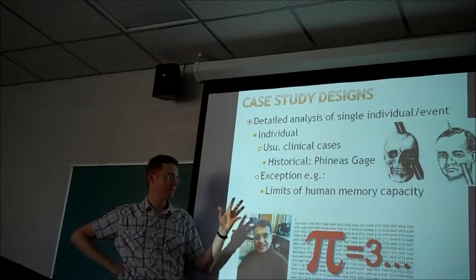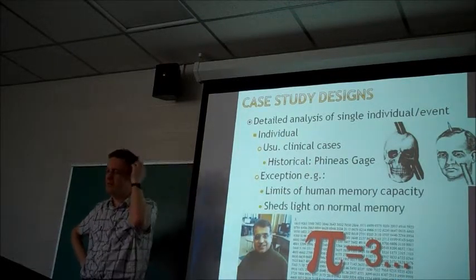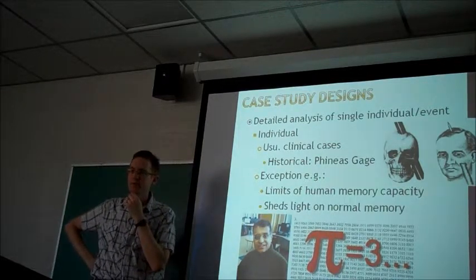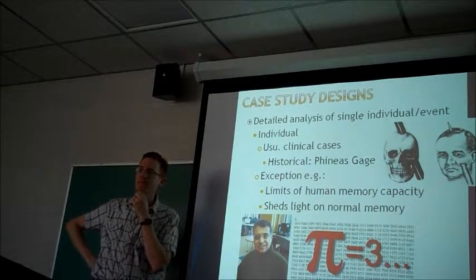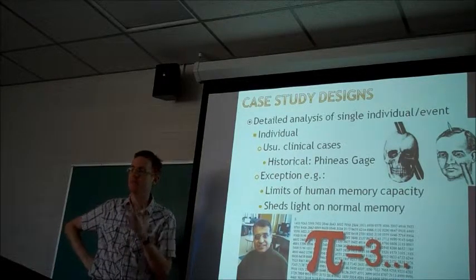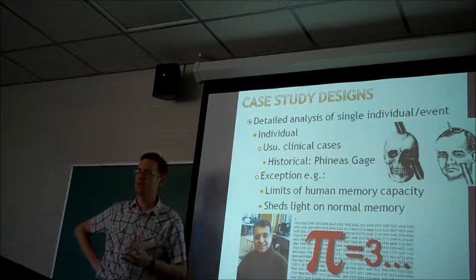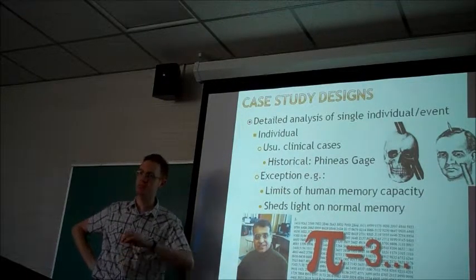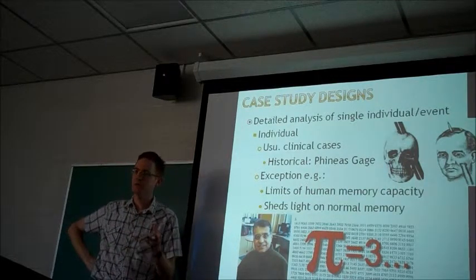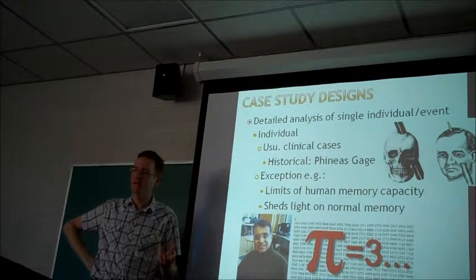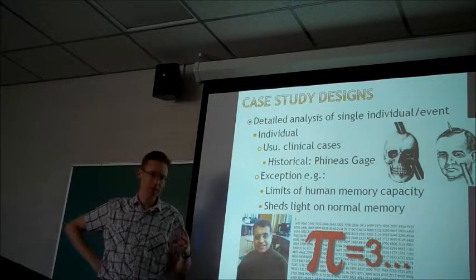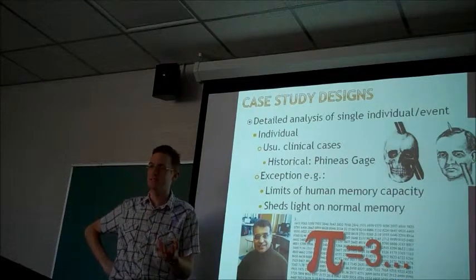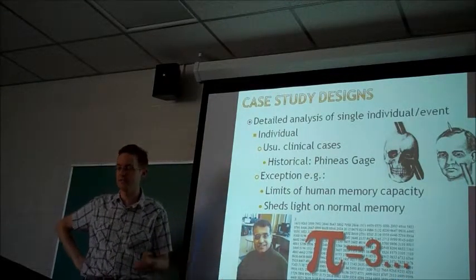That does tell us something about the limits of human memory, but it also might shed some light on normal memory. Anytime you look at the extremes of intelligence, that can be really useful for learning about the nature of intelligence — people who have extremely low intelligence, some type of developmental deficit or disability, and then people who are really advanced. Those are really useful cases to study, and they're extremely rare, so you really have to do these case studies.